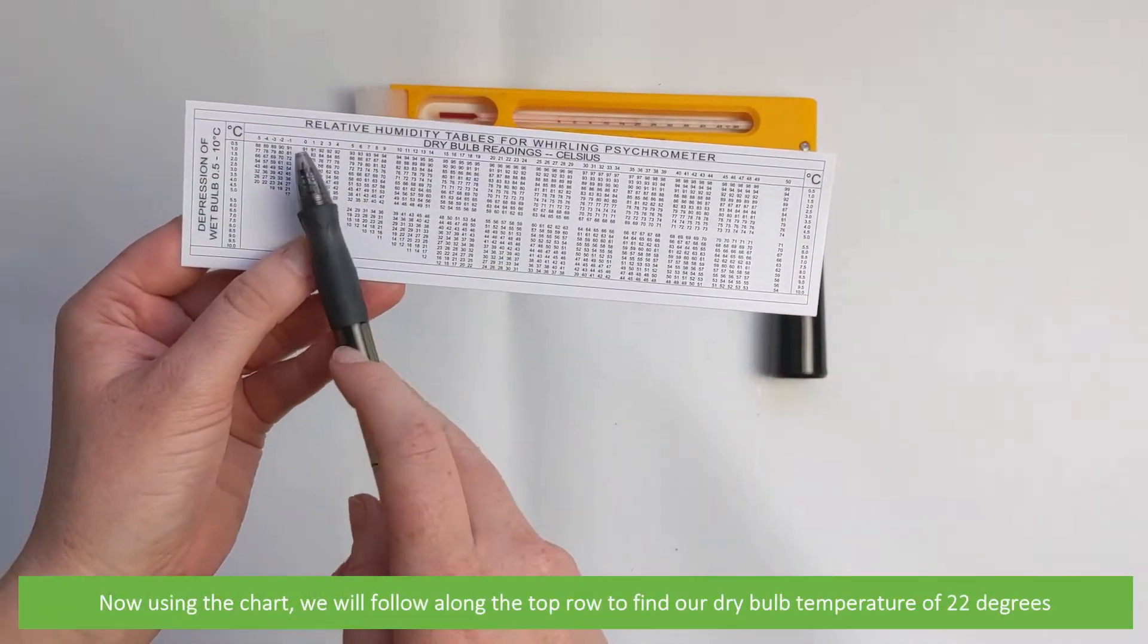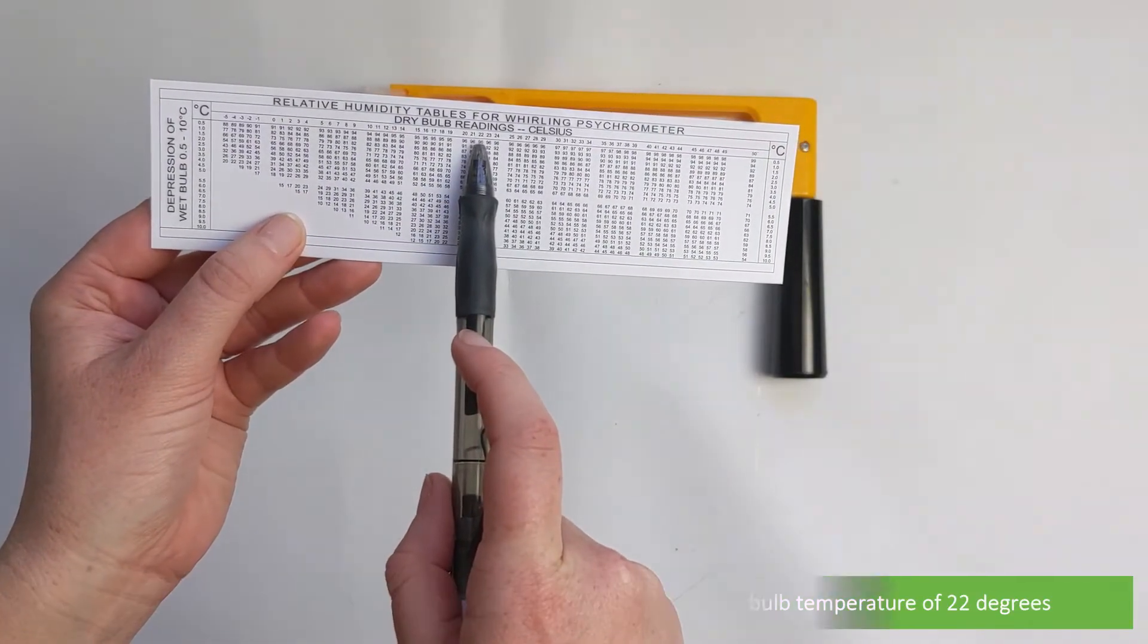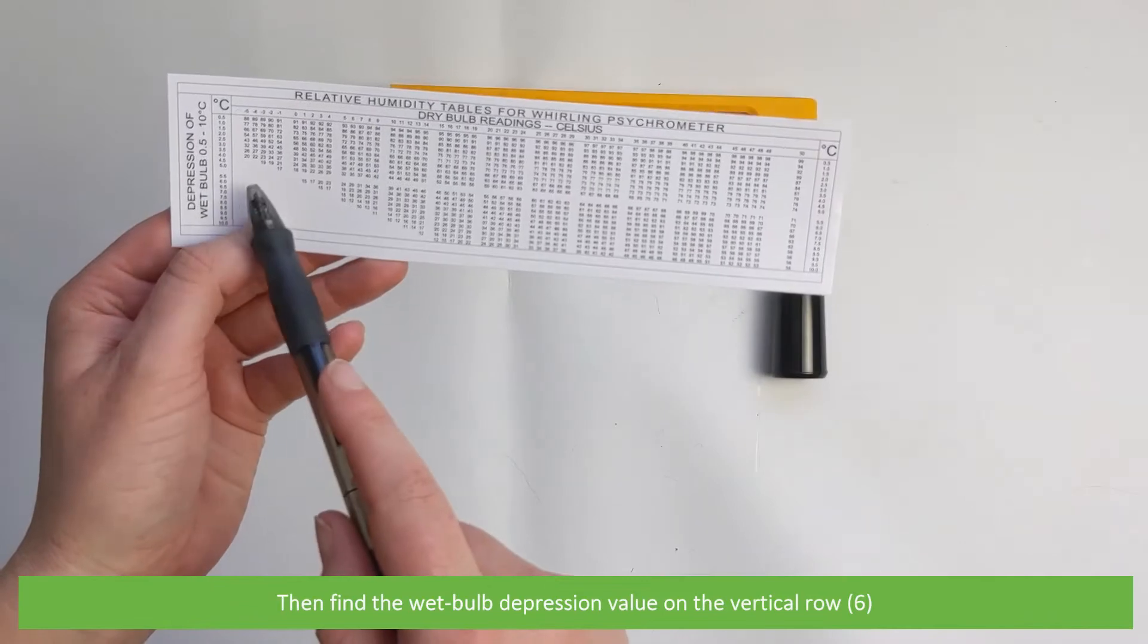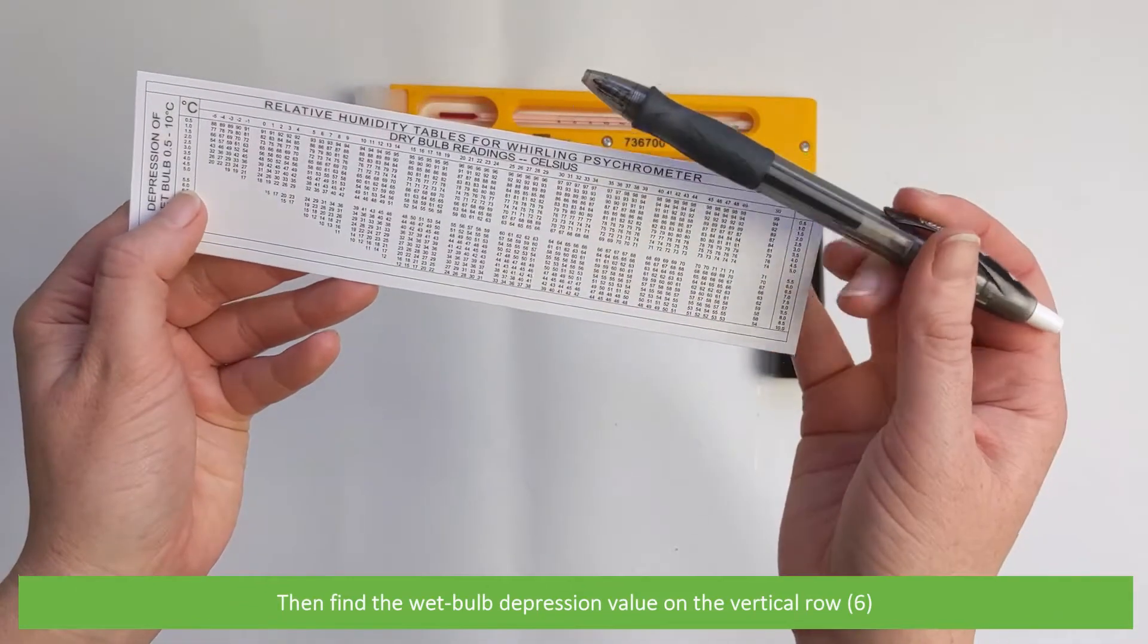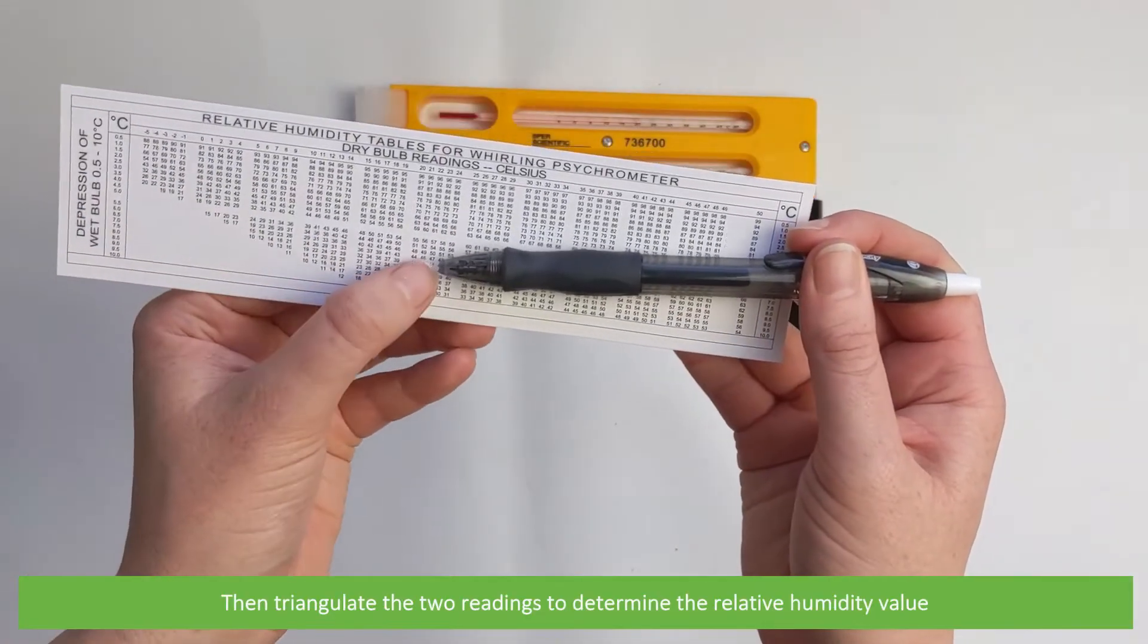Now using the chart, we'll follow along the top row to find our dry bulb temperature of 22 degrees. Then find the wet bulb depression value on the vertical row—6. Triangulate the two readings to determine the relative humidity value.